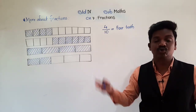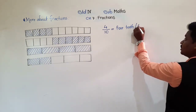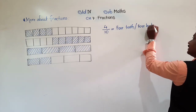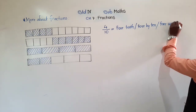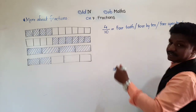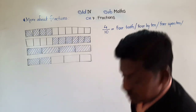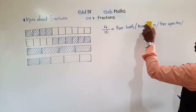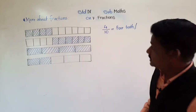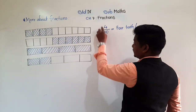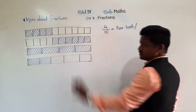There are other ways to read it as well. This can be written and read as '4 tenths', or '4 by 10', or '4 upon 10', or '4 divided by 10'. So just keep it in mind: 4 tenths, or 4 by 10, or 4 upon 10. This is the fraction, 4 upon 10. This representation is called the fraction for the shaded part of this strip.